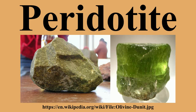Mantle peridotites are sampled as Alpine-type massifs in collisional mountain ranges, as xenoliths in basaltic rocks or kimberlite, or as abyssal peridotites. In all cases these rocks are parametamorphic and represent either fertile mantle or partially depleted mantle. Alpine peridotites may be either of the ophiolite association, representing the uppermost mantle below ocean basins, or masses of subcontinental mantle emplaced along thrust faults in mountain belts.